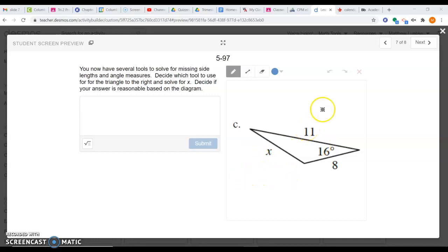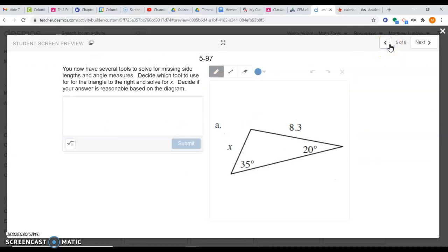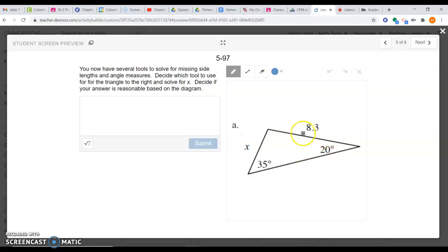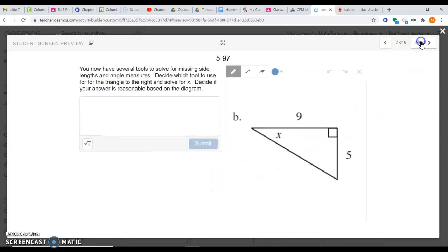Here's my video for slide number 7 on lesson 5-33, where we're learning about the law of cosines. This is the problem where you need to figure out what tool to use for slides 5, 6, and 7, then solve for the missing variable x. Each one uses a different tool.